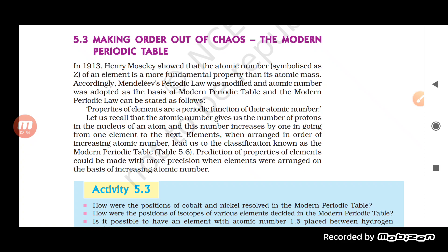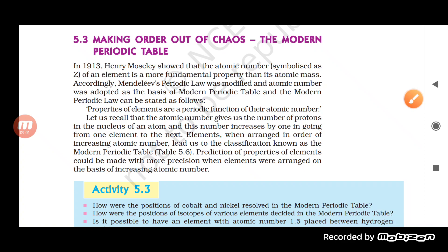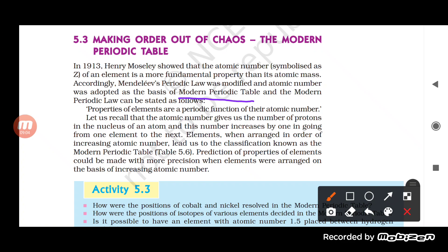The modern periodic law states: the properties of elements are a periodic function of their atomic number. This is the modern periodic law given by Henry Moseley.